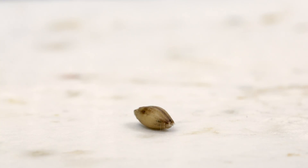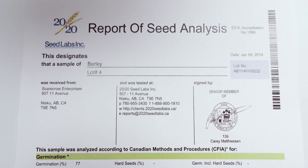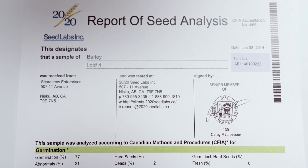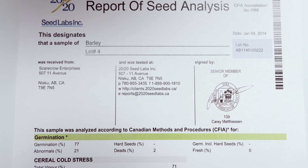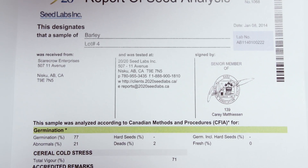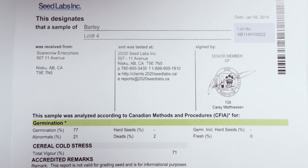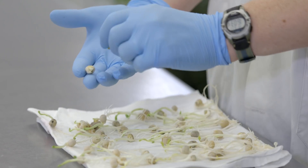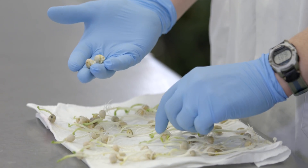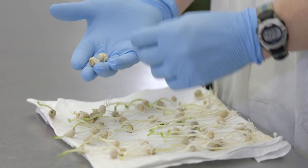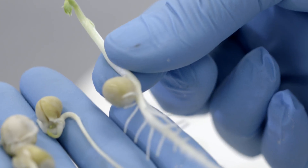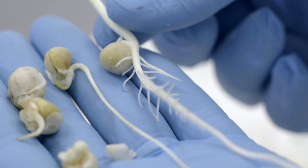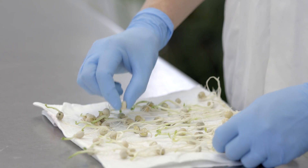The report of seed analysis states the percentage of normal seedlings that are capable of developing into healthy plants in the field. Also, abnormal seedlings that have one or more damaged or missing structures are noted.